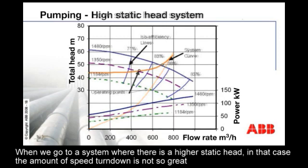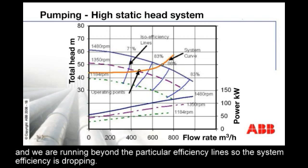When we go to a system where there's a higher static head, the amount of speed turn-down is not so great, and we're running beyond the particular efficiency lines, so the system efficiency is dropping.